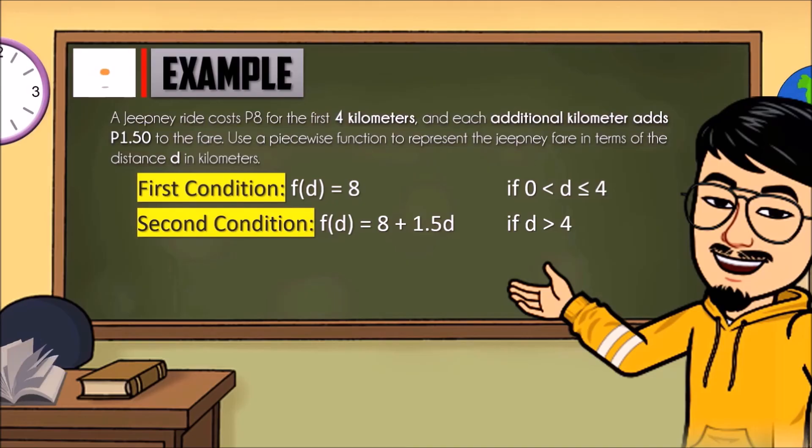Second condition: F of D equals 8 plus 1.5D if the distance is greater than 4.